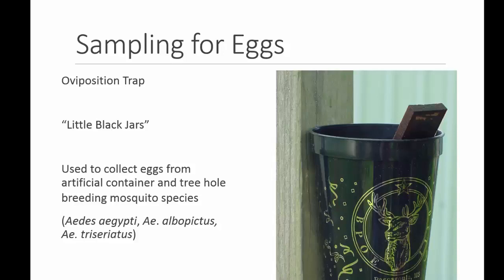Some sort of substrate is placed against the edge of the jar to act as an actual oviposition site. This site can be made of a number of different materials, such as seed germination paper, muslin, formica, balsa wood, or some sort of tongue depressor. It's placed vertically inside the container with the water covering about half of it. Gravid or egg-filled females usually use that substrate to lay eggs above the water surface, and you should check the traps about every 10 to 14 days or so.